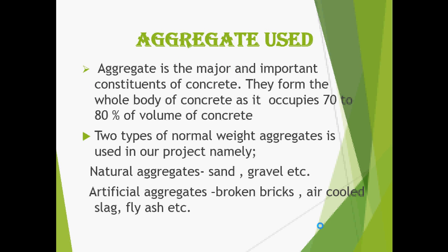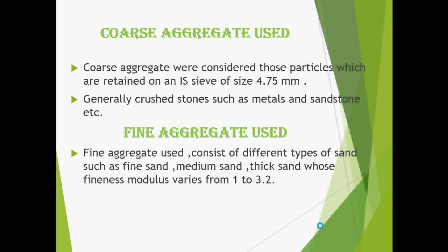Aggregates occupy 70 to 80 percent of the volume of concrete. Natural aggregates consist of sand and gravel, while artificial aggregates include broken bricks, air-cooled slag, and fly ash. These are classified on two bases: coarse aggregate and fine aggregate used.